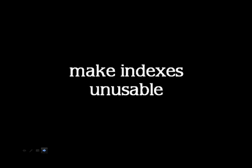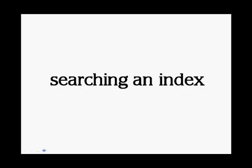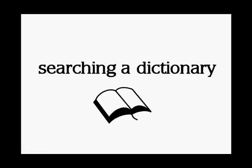Tried and true recipe number 2 consists in making existing indexes unusable. Whenever you search a key in an index, it's very similar to searching a word in a dictionary.